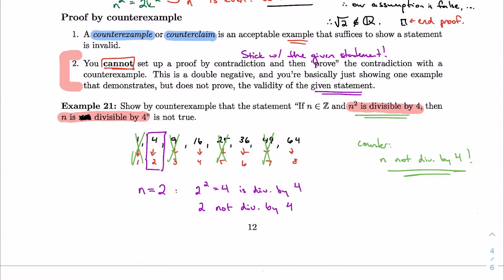And the other valid counterexample here on the screen would be 36. Would be n equals 6, because 36 is divisible by 4, but 6 is not.